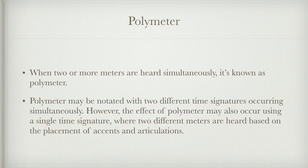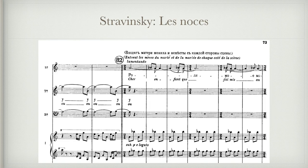Composers sometimes use accents and articulations, or phrase indicators similar to slurs, to show how to phrase a melody. In this Stravinsky piece at measure 82, the violins have what is essentially a 2/4 time signature while the vocal part has what's equivalent to a 3/4 time signature — yet the whole piece is written in 2/4. When played back, the vocalist sounds like they're performing in a different time signature than the rest of the ensemble, with accents occurring every 3 beats.